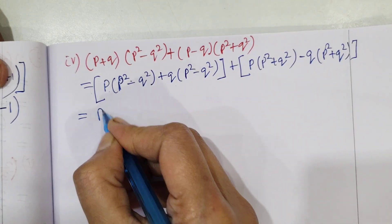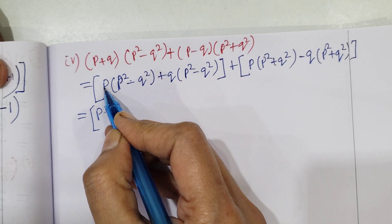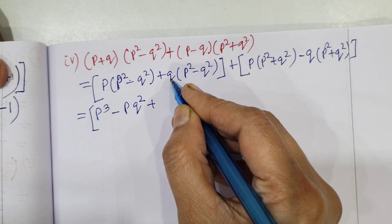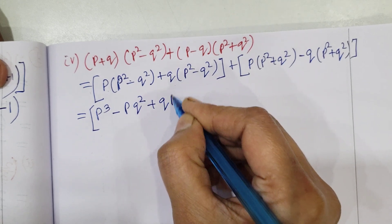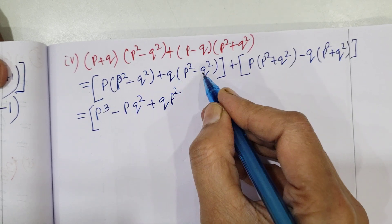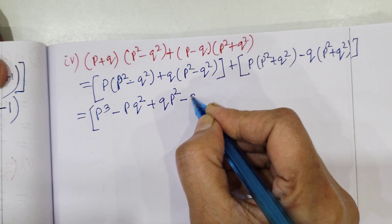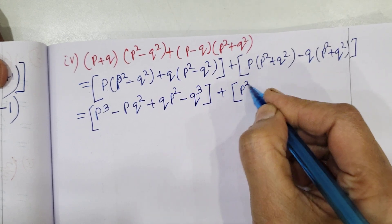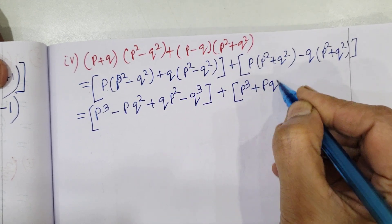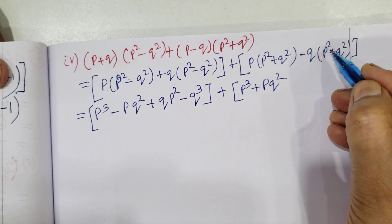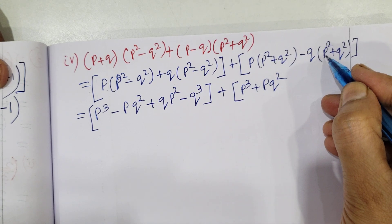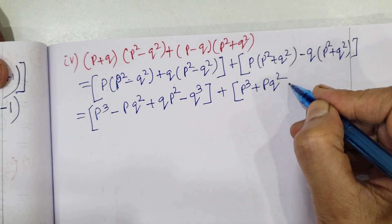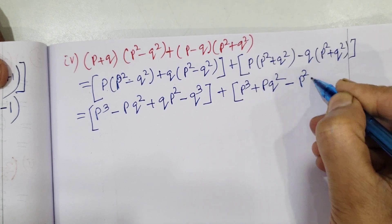Expanding: P into P² gives P³, minus P into Q² gives minus PQ². Then Q into P² gives QP², minus Q into Q² gives minus Q³. With opposite signs, the next part: plus P into P² gives P³, plus P into Q² — since the sign is plus, we get plus PQ². And minus Q into P² gives minus P²Q.